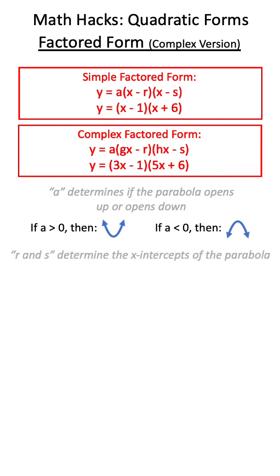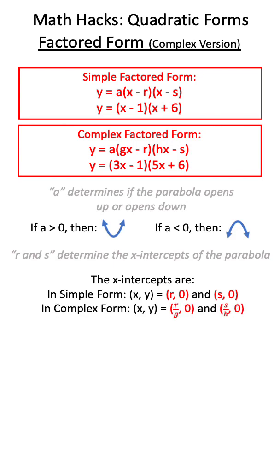Additionally, R and S will still give us the x-intercepts of our parabola. However, unlike simple form, complex form actually uses the equation R over G and S over H to give us our x-intercepts. In an equation like this, our x-intercepts would be as shown.